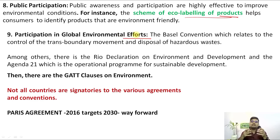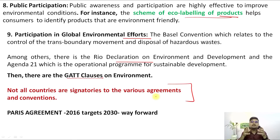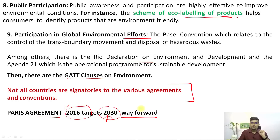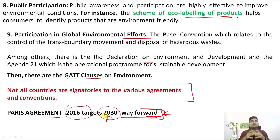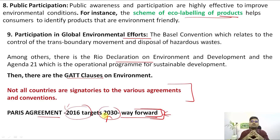Participation in global environmental efforts is critical. Many conventions and declarations have been signed — the Basel Convention, Rio Declaration, and GATT Clause on Environment — but not all countries are signatories. The Paris Agreement targets are being revised in 2030, and the way forward is reducing dependence on fossil fuels. To sustain this planet in terms of environment and quality of life, we must ensure the sustainability of resources and act responsibly now for the benefit of the future.